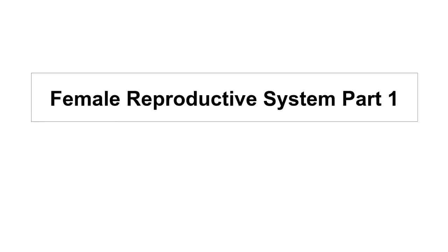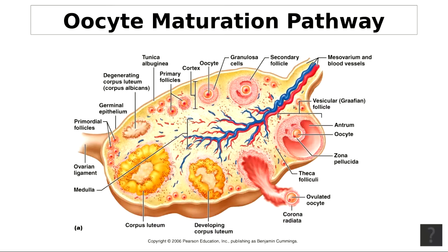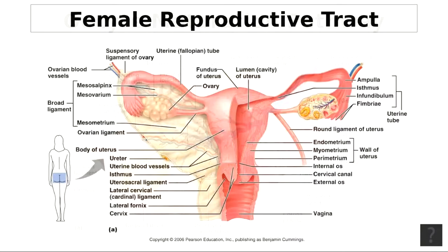Let's look at the female reproductive system — this is part one, so get your notes out. We have the ovaries, which are paired almond-shaped glands containing about 400,000 primordial follicles. Here are the two ovaries, one on each side. They are the primary sex organ of the female.